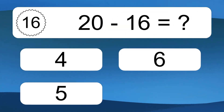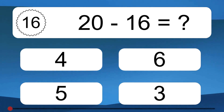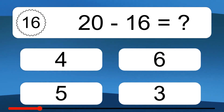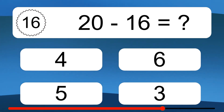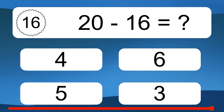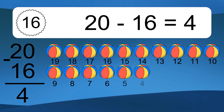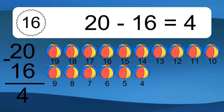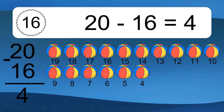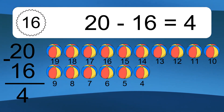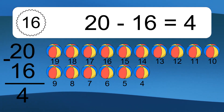20 minus 16 equals what? 20 minus 16 equals 4. Let's count it. 19, 18, 17, 16, 15, 14, 13, 12, 11, 10, 9, 8, 7, 6, 5, 4.